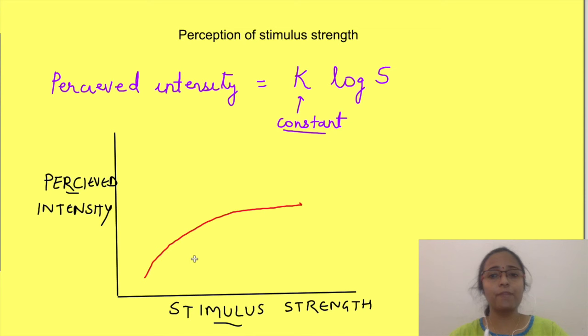See, for lower strength of the stimulus, say here, this much is the perceived intensity. If I change the stimulus, the perception increases this much. But if you see for higher strength of a stimulus, when stimulus intensity is this much, this is the perception level.